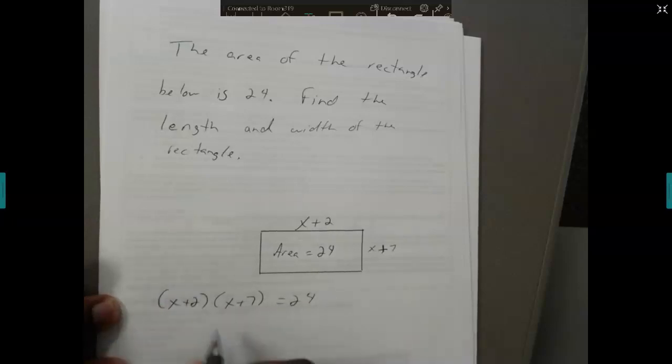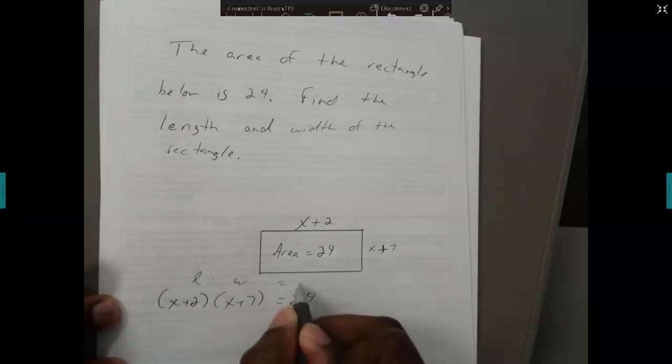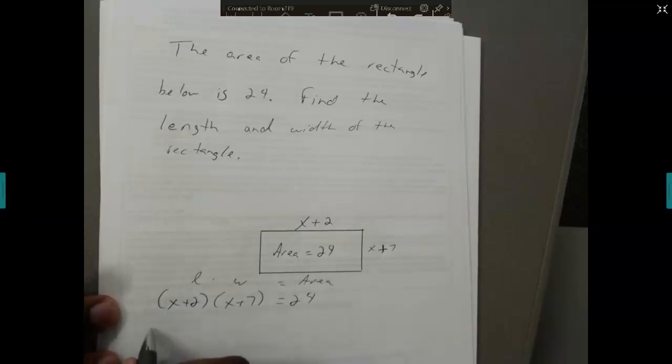If that's true, I can FOIL this together and get x squared plus 7x plus 2x plus 14 equals 24.